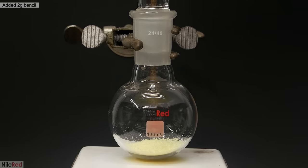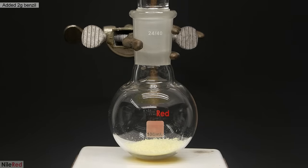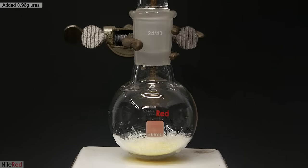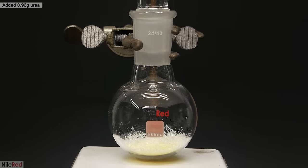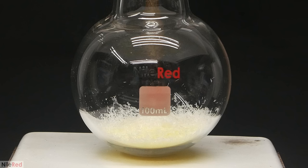So, into the flask, I dumped 2 grams of the benzyl that I just made. Then on top of this, I added 0.96 grams of urea. The reason I only used 2 grams of benzyl, instead of the full 4.2 that I just made, was because I wanted to use less urea. This reaction isn't very efficient with it, and I only recovered several grams from my urine, so I have to be sparing.